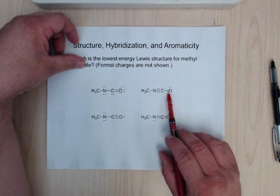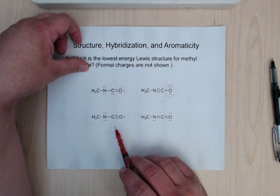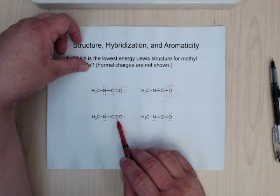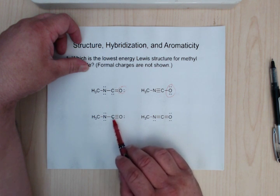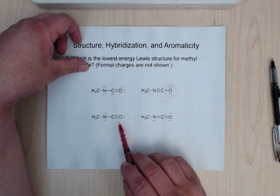And again, this oxygen only has 6. So for here, 1, 2, 3, 4, so we're okay there. 1, 2, 3, 4 for the nitrogen, 1, 2, 3, 4 for the carbon, so that's fine.